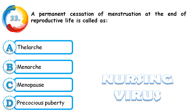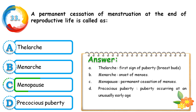Question 33: The permanent cessation of menstruation at the end of reproductive life is called thelarche, menarche, menopause, or precocious puberty. The correct answer is menopause. Thelarche is the first sign of puberty — the starting of breast buds. Menarche is the onset of menses. Precocious puberty is puberty occurring at an unusually early age, before age 13 or 14 years.